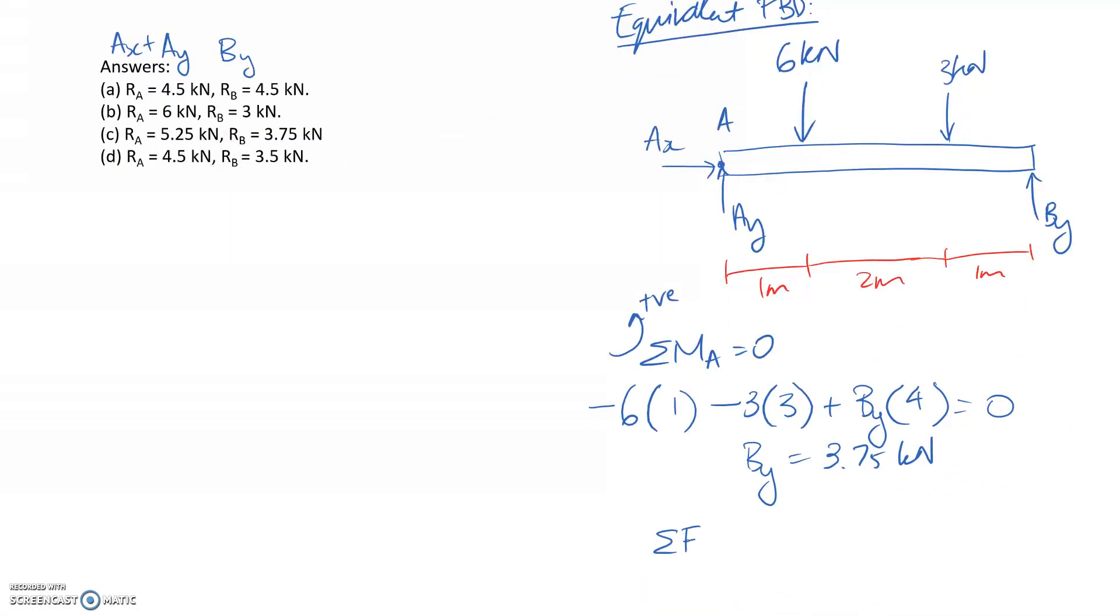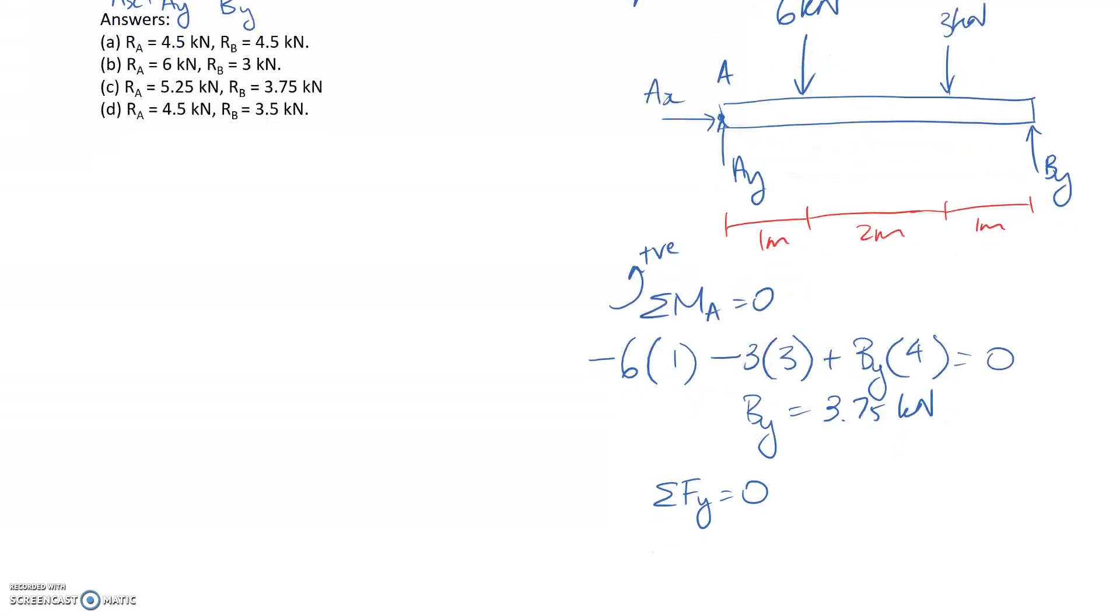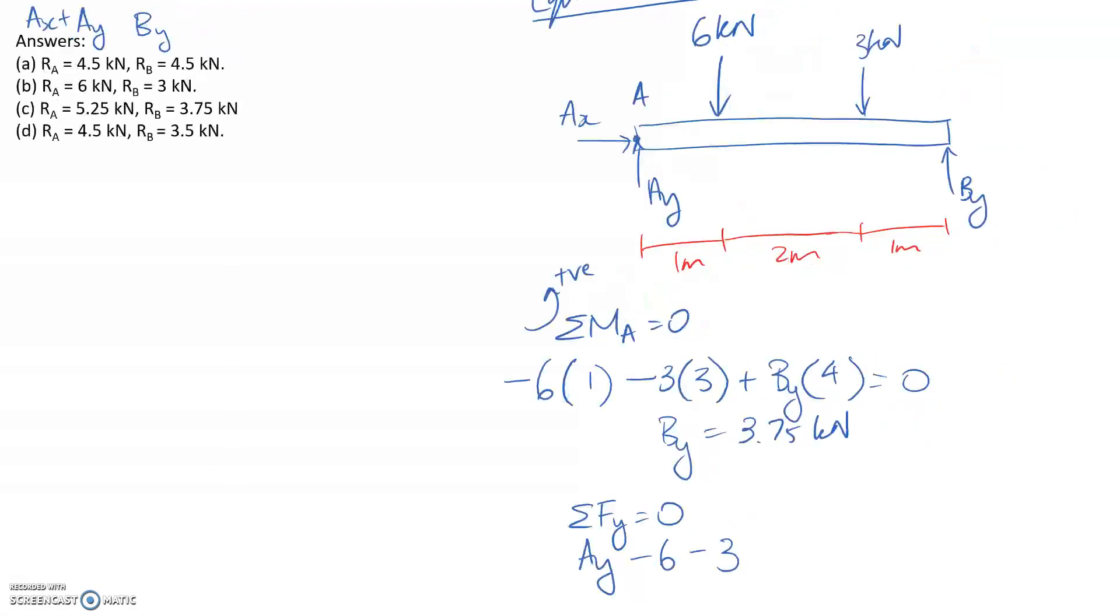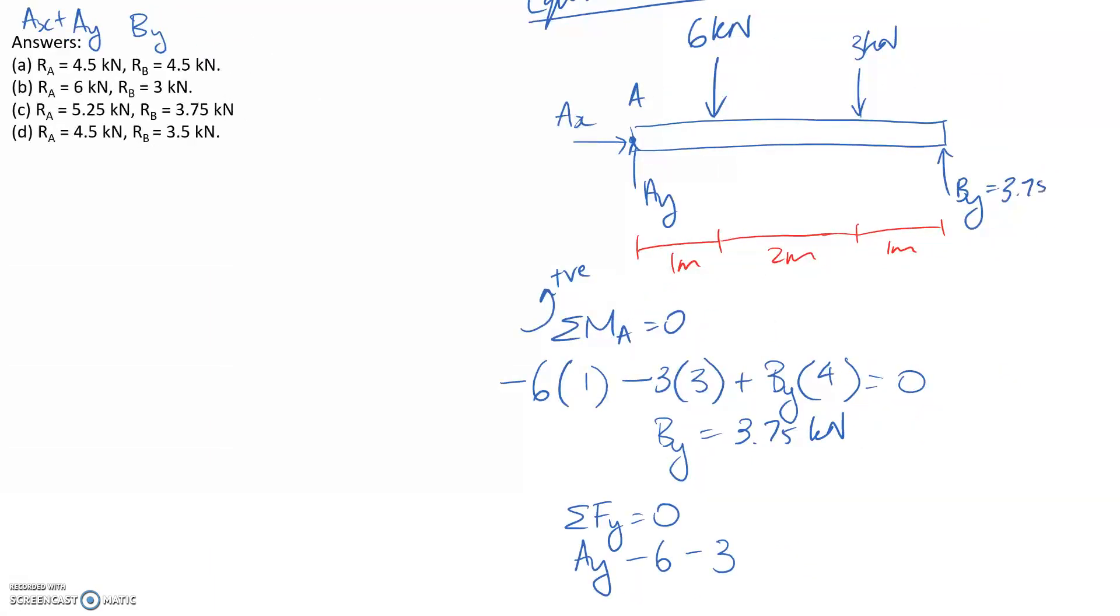If I now apply my other equilibrium equations, if I sum forces in the y direction to be equal to 0, I've got Ay going up, so it should be positive. I've got the 6 kilonewtons going down, so it's negative. Same with this one. And By is going up, and we just figured it out to be 3.75, so that's going to be added on the end. If you go and solve for Ay, it comes to 5.25 kilonewtons.